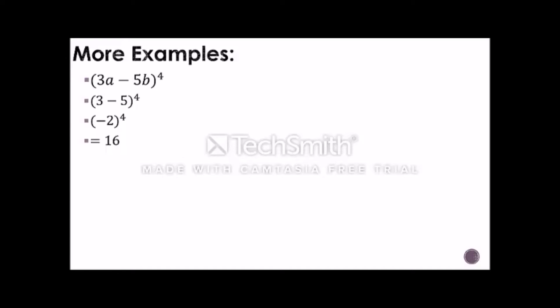To check if our answer is correct, we can use the long method which is expanding the equation. So, the expanded form of this is 81a to the 4th minus 540a cubed b plus 1350a squared b squared minus 1500ab cubed plus 625b to the 4th. After expanding, we will add all the coefficients and the answer is also 16.